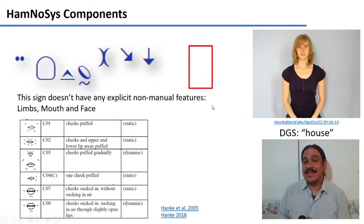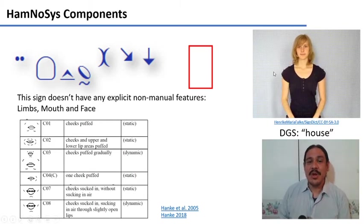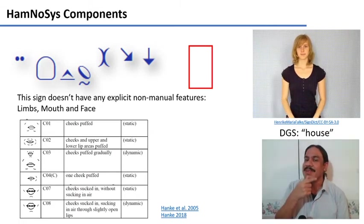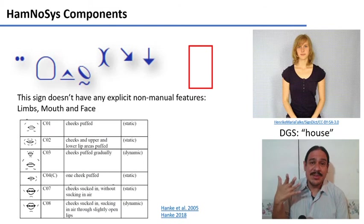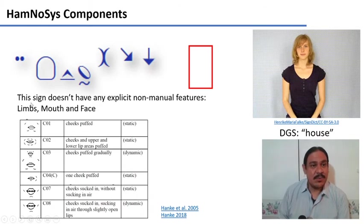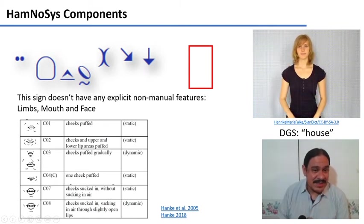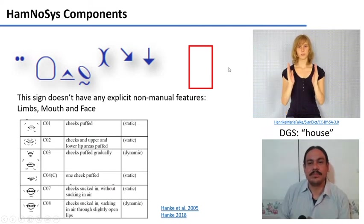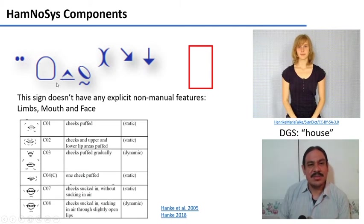This transcription also doesn't have explicit transcription for non-manual features because she's not making any of them. She's not moving her eyebrows. She's moving, again, her mouth to say the German word, but that's not part of the sign. But the system does include details for how your limbs are moving, for what your mouth is doing, and what your face will be doing. For example, whether your cheeks are puffed or whether you puff them gradually, whether you suck them in without sucking any air and so forth. So this transcription, as you can see, tells you the shape of your hand, the direction and orientation of your palm.